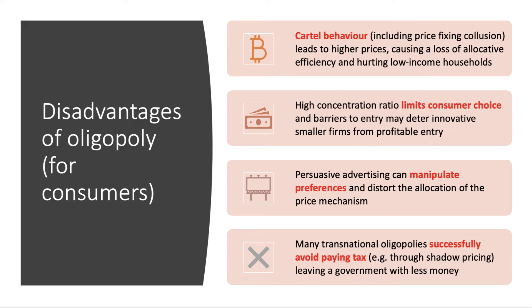The second disadvantage is that a high concentration ratio — the domination of just a few firms — tends to limit consumer choice, and if barriers to entry are particularly high, that might deter innovative smaller firms from making a profitable entry. The third point concerns the dangers of highly persuasive, occasionally misinformed advertising: persuasive marketing and advertising can manipulate preferences and therefore distort the allocation of resources and the functions of the price mechanism.